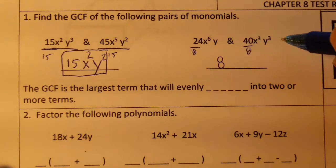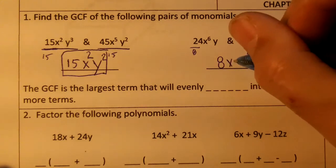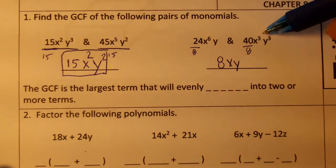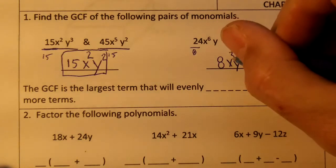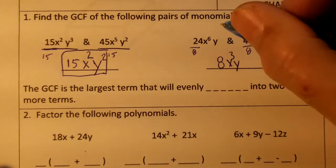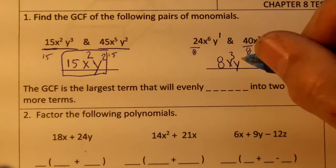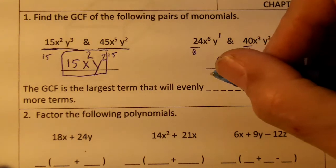They both have x and they both have y. The exponents on x are 3 and 6. 3 is the smallest one. The exponents on y are the understood 1 and 3. So y would just be the GCF.